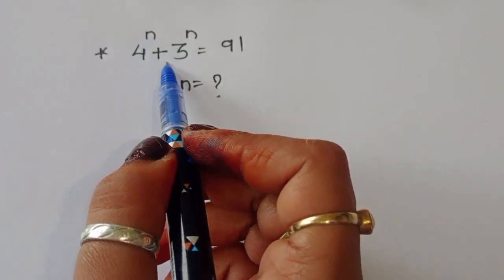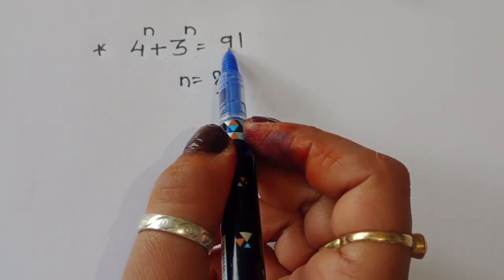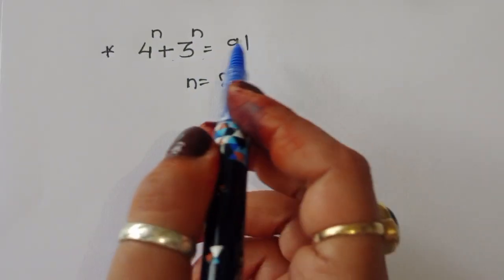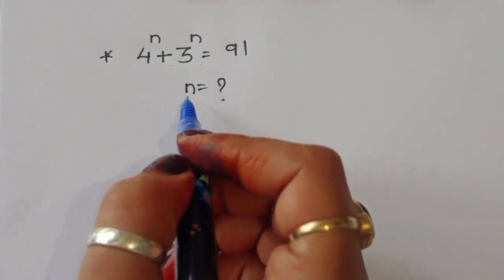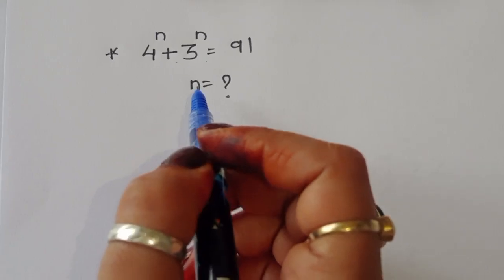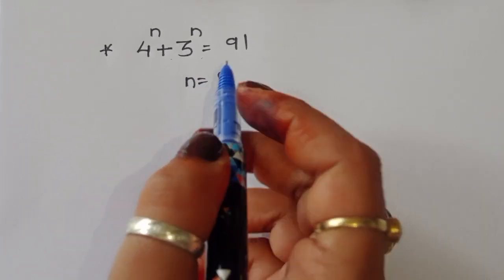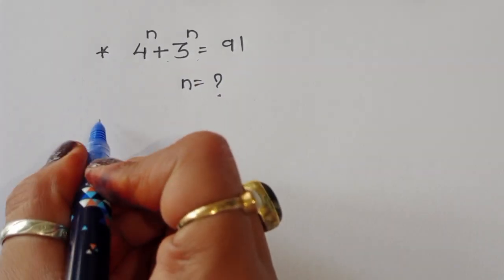4^n + 3^n = 91. We have to find out the value of n. Let's see the solution.